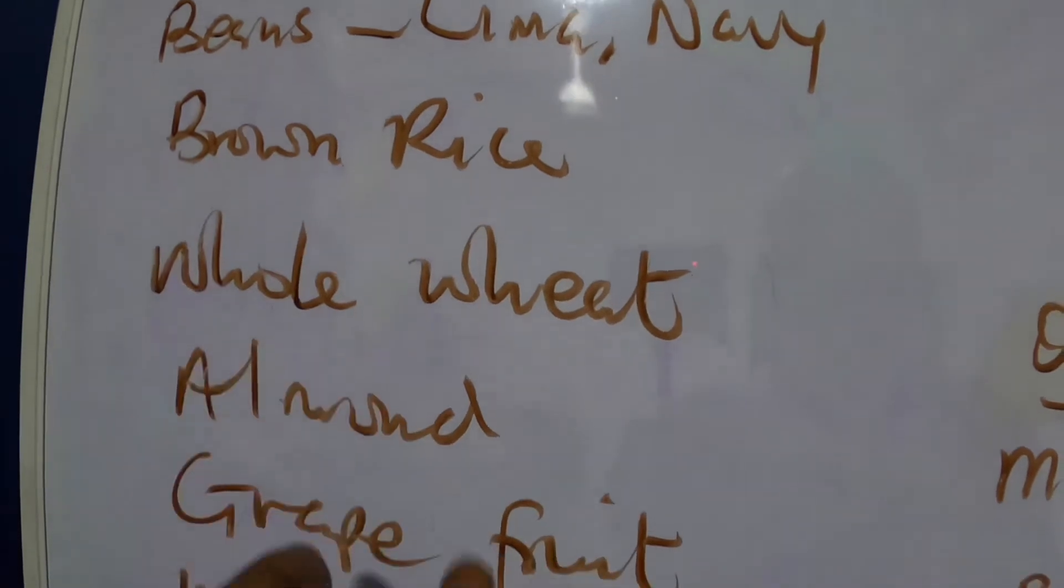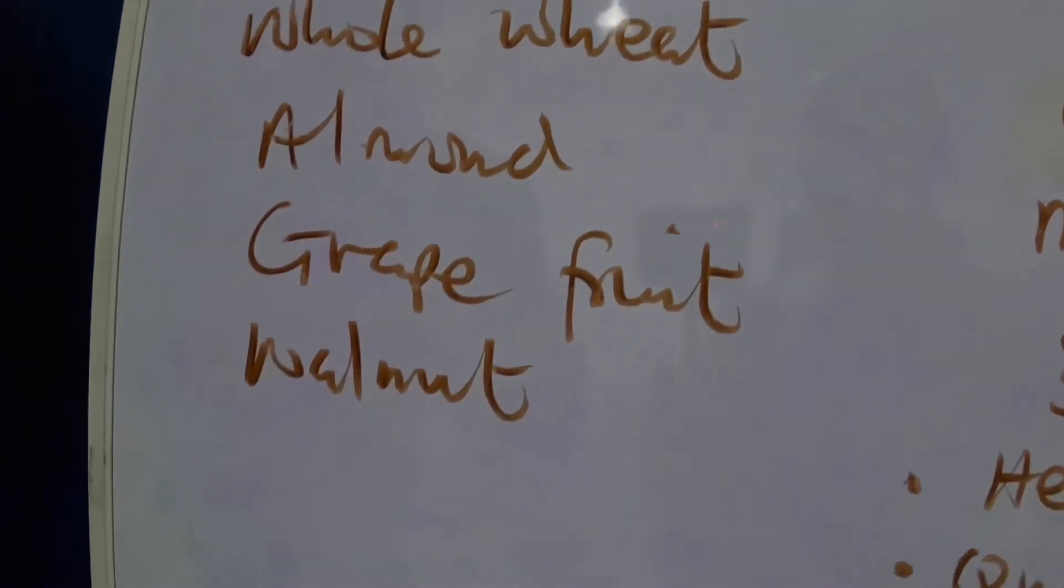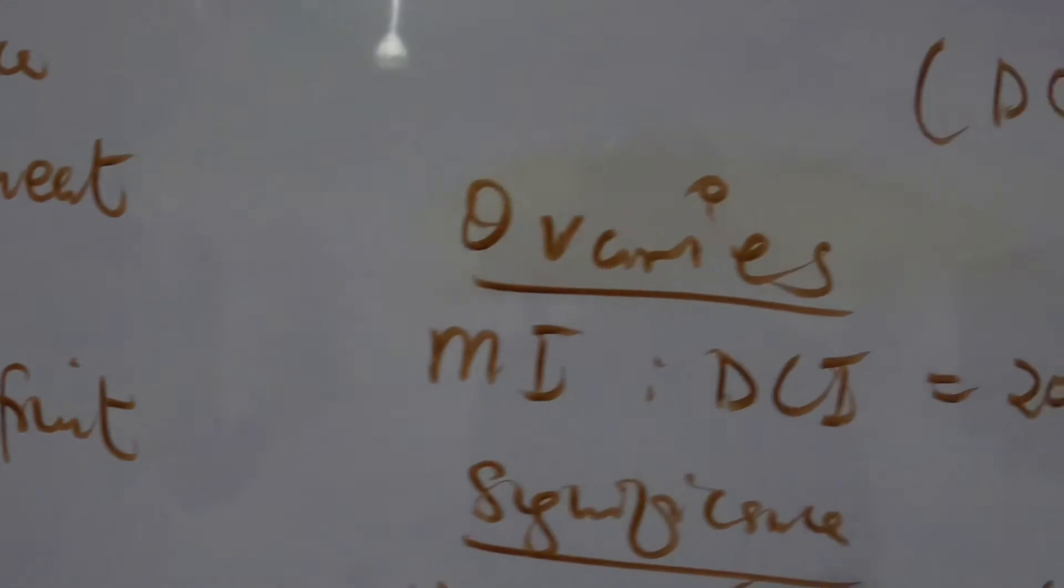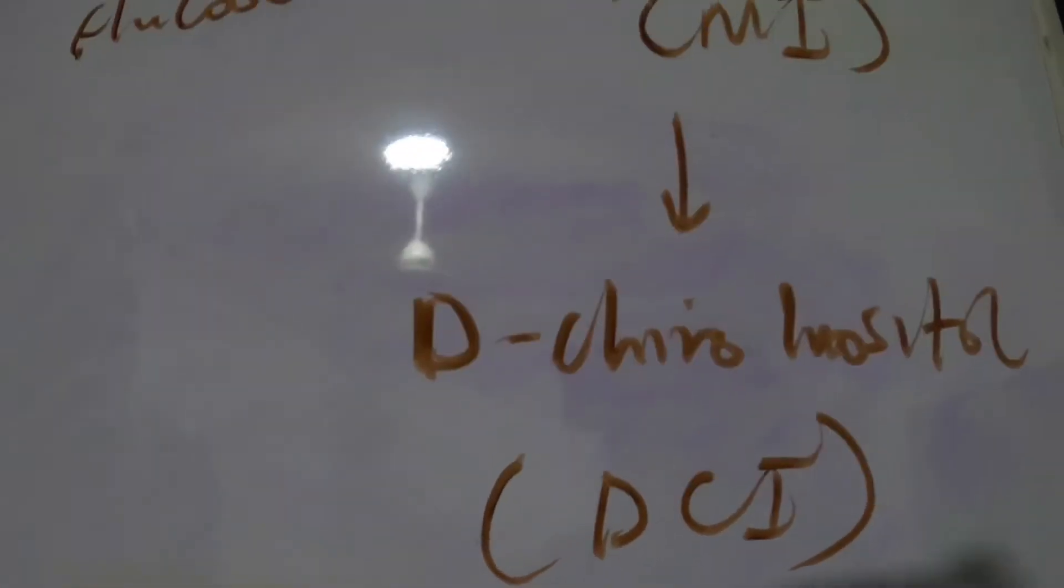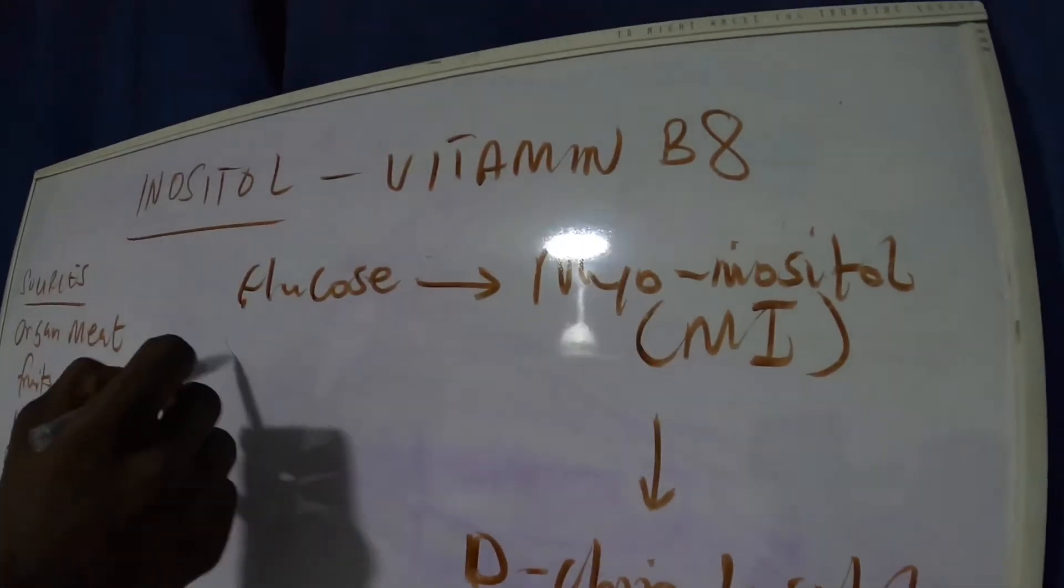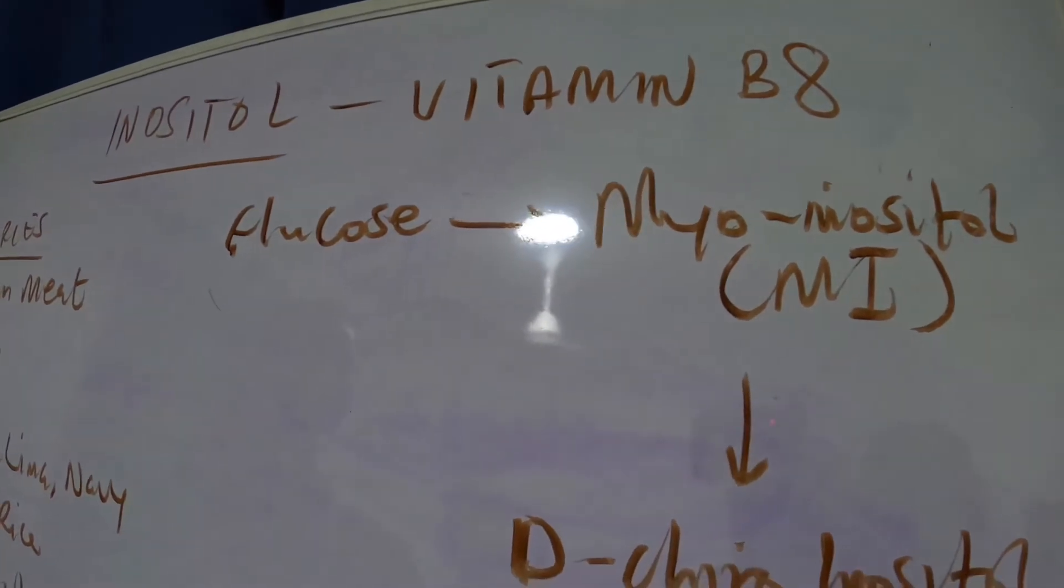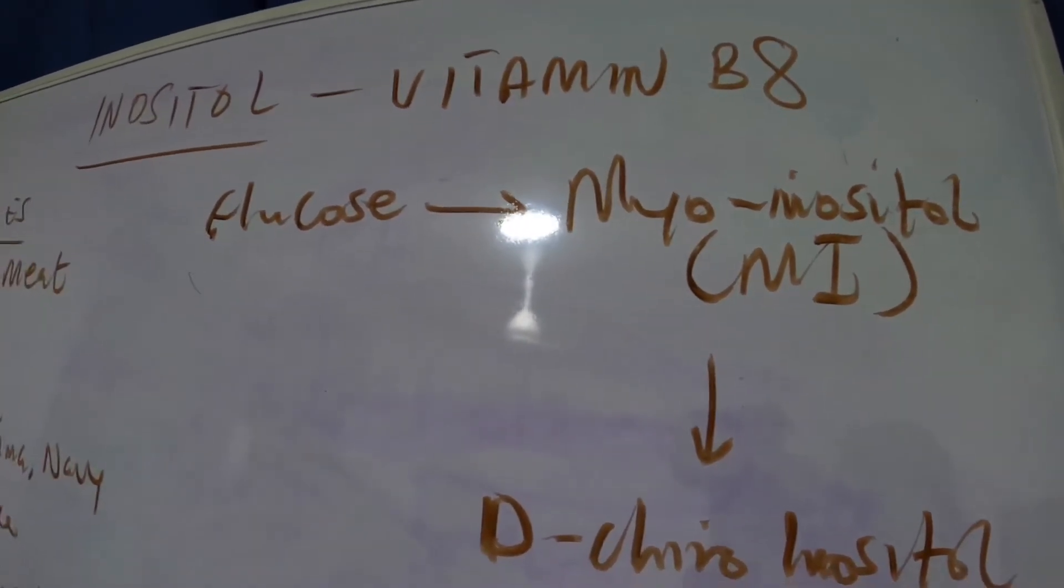Almond, grapefruit, and walnut. So inositol is basically, as I said earlier, vitamin B8, and it's gotten from glucose. As you can see from the board, after glucose has been broken down to give us the energy we need, a part of the glucose skeleton is converted into myo-inositol.